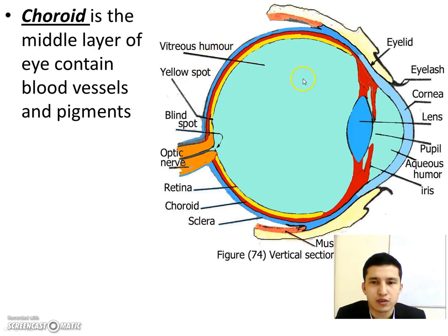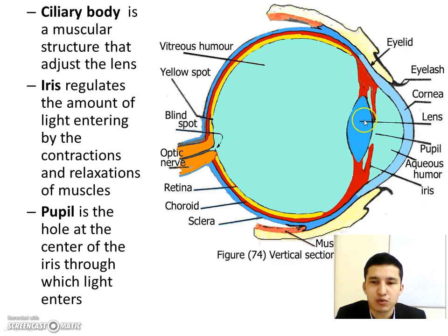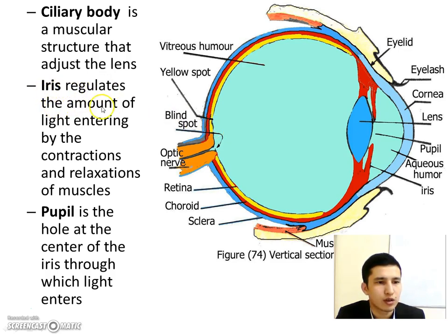The choroid contains blood vessels and the ciliary body. The ciliary body is a muscular structure that adjusts the lens. These muscles maintain the adjustment of the lens — the lens can become wider or thinner to adjust the focus of light onto the retina.